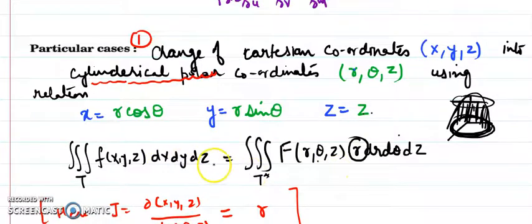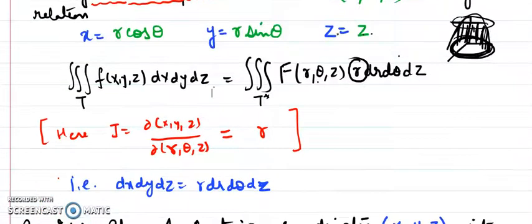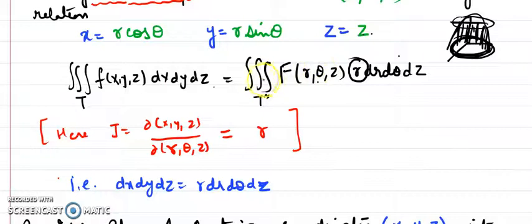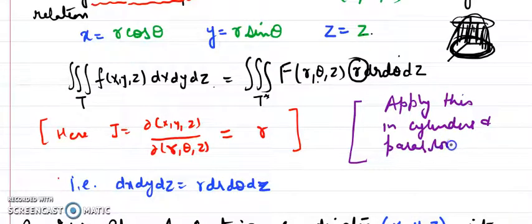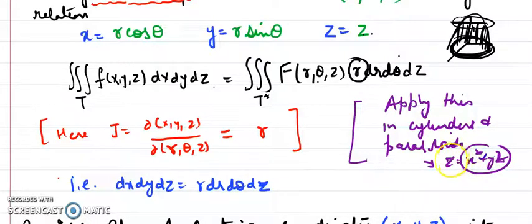When we solve the Jacobian for cylindrical polar coordinates, it comes out to be r. So dx dy dz is replaced by r dr dθ dz. The important substitutions to remember are: x = r cosθ, y = r sinθ, z = z, and the volume element becomes r dr dθ dz. Apply this transformation when the region is a cylinder or a paraboloid — that is, wherever you see x² + y² in a 3D region, switch to cylindrical polar coordinates.